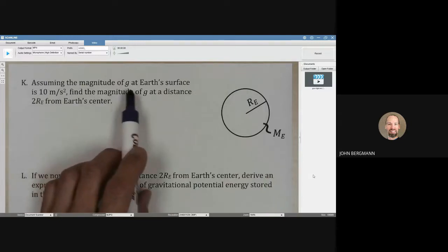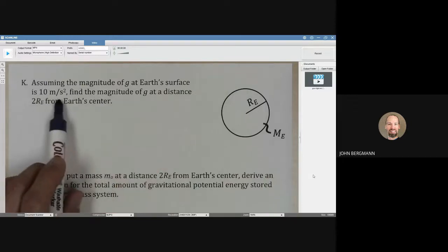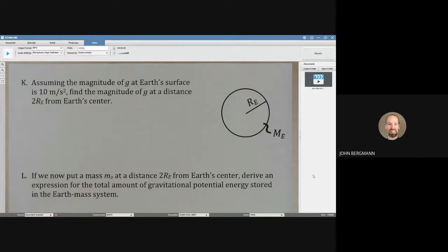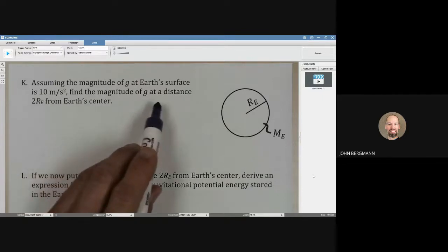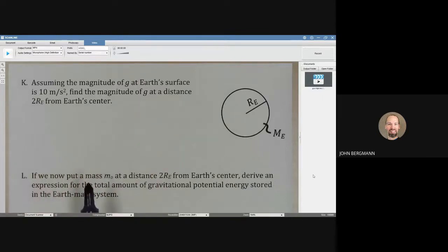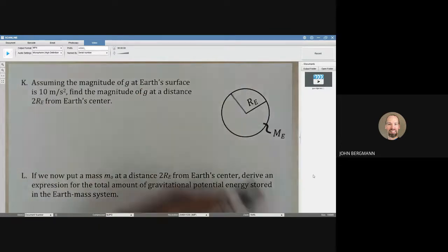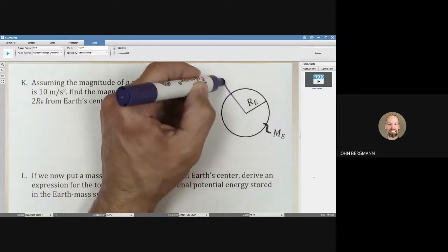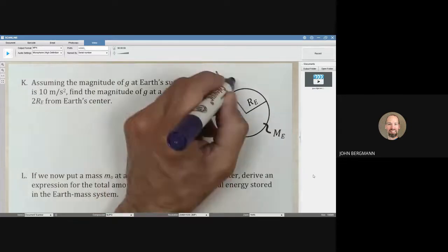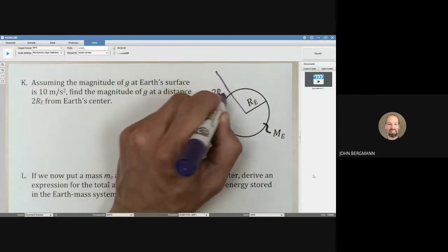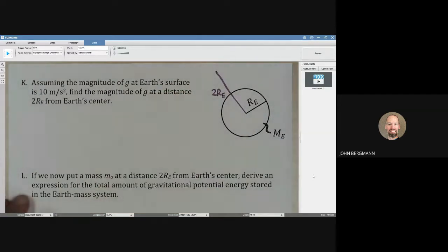Assuming the magnitude of g at Earth's surface is 10 meters per second squared, which we've talked about in the past as a good estimate, find the magnitude of g at a distance of 2RE from Earth's center. There's RE right there, and 2RE would be right there - one radius of the Earth above the surface.